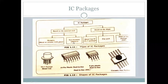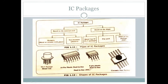Based on shapes, we can identify: Metal Can IC, Flat Pack, and Dual Inline Package (DIP). These are the main shape-based categories. The ceramic flat package is one example of the flat package type.